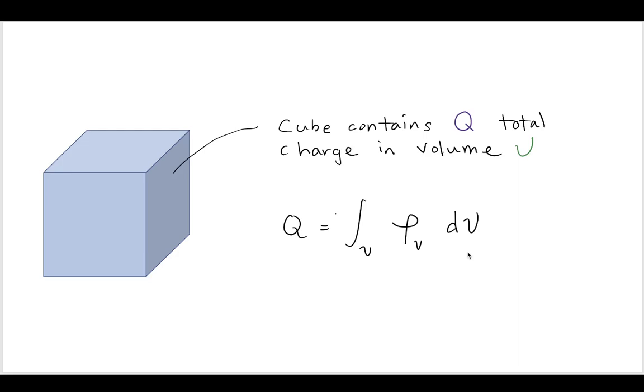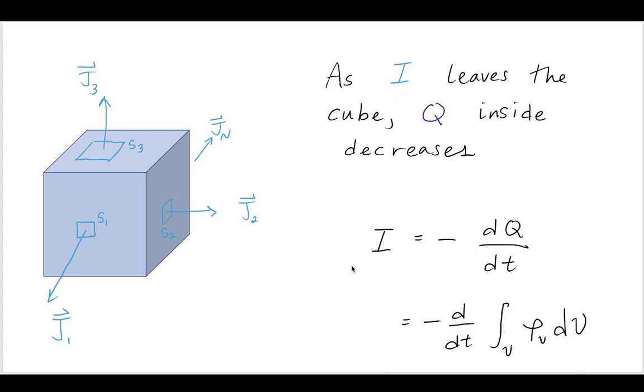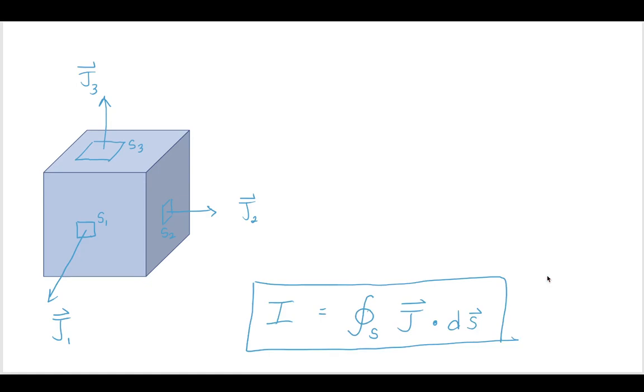Now, going back to another early property we learned, we could find the total amount of Q, the total number of charges in a volume, by doing a volume integral of the charge density inside of that volume. So if we were to take this integral, we would get the total Q. Therefore, we can substitute this Q with this integral. So now we have the current is equal to the derivative, d/dt, of that integral, ρv.